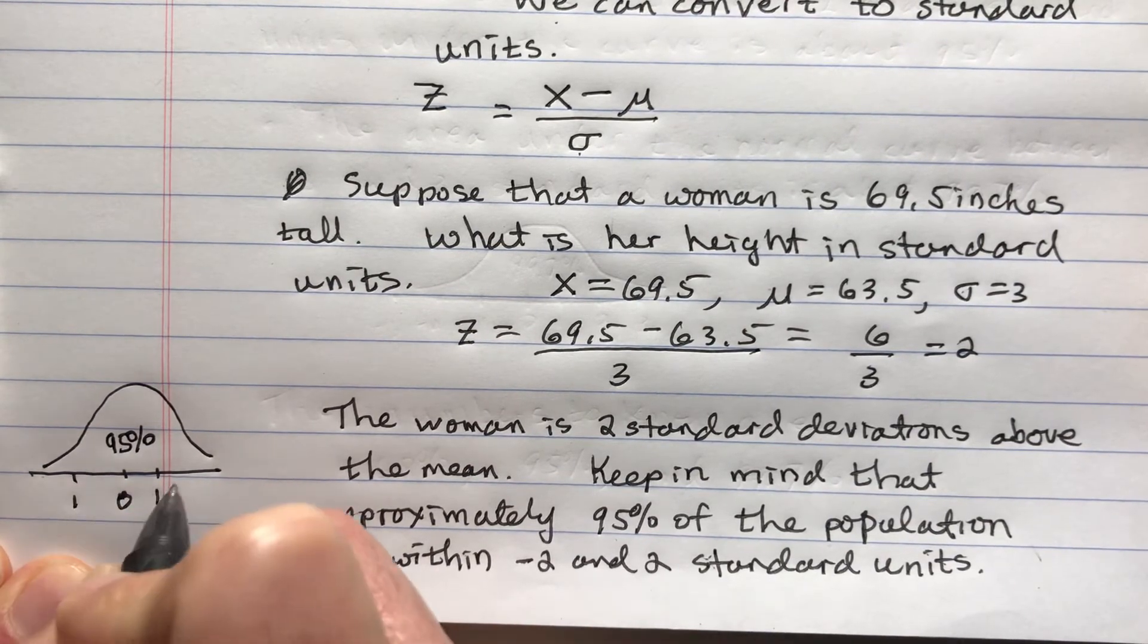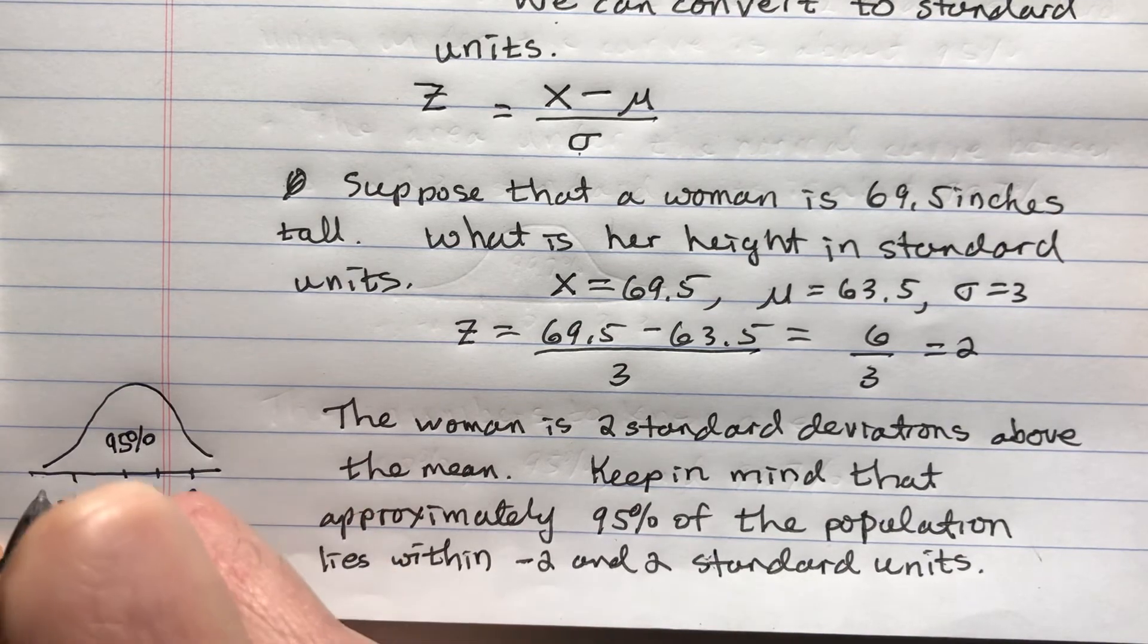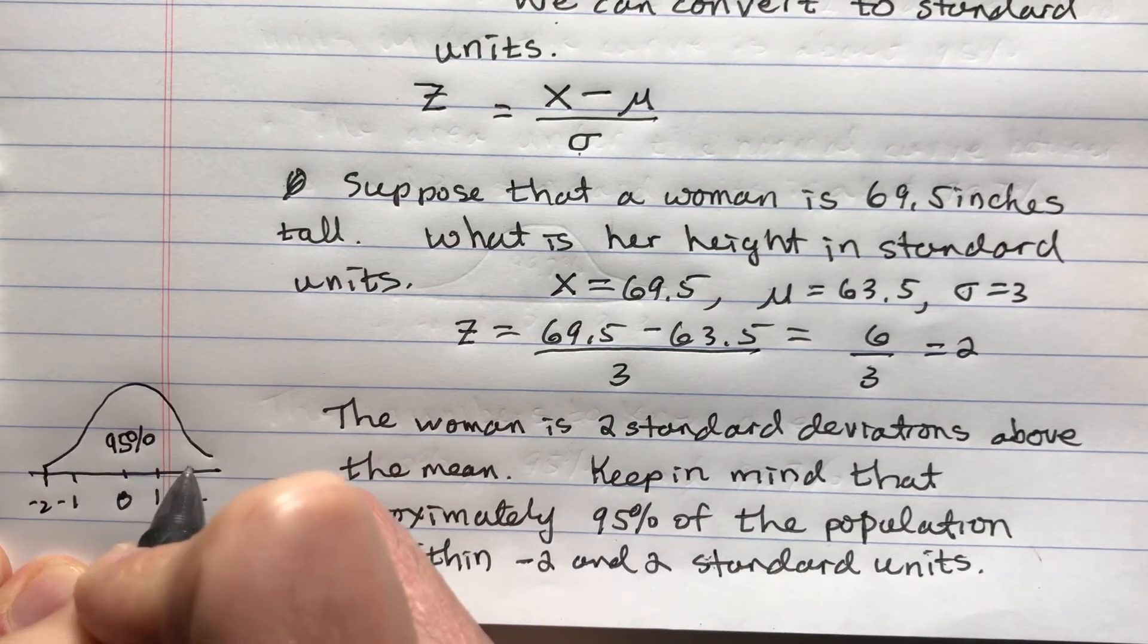You have 95%. There's 0, negative 1, 2, negative 2. That's 95%.